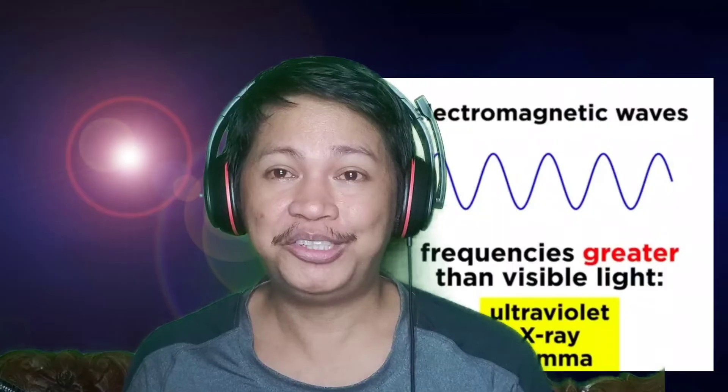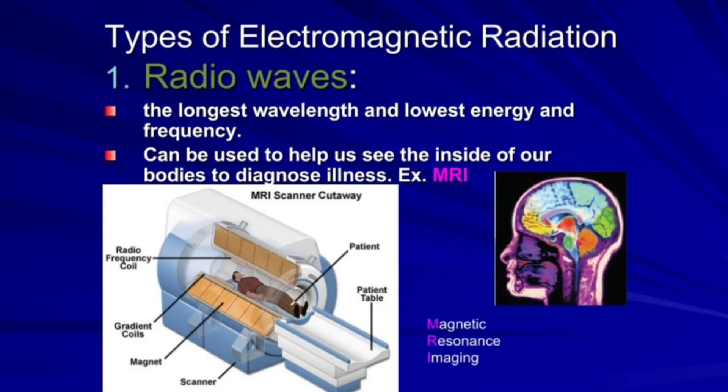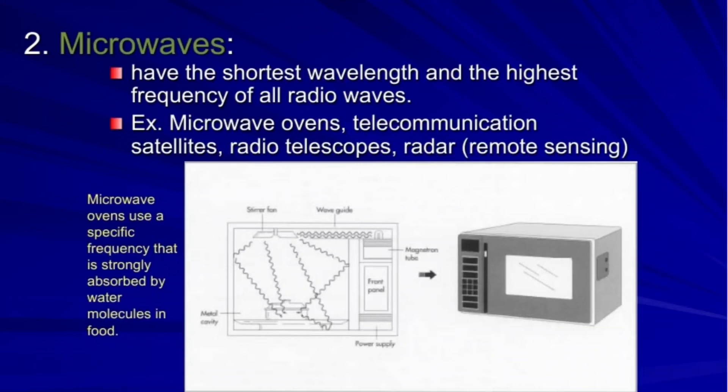The challenge now is to know the technological applications of each wave. I hope that by the end of this vlog you will have learned what these electromagnetic waves are and their applications. Here are the types: number one, radio waves — the longest wavelength, lowest energy and frequency — which can be used to help us see the inside of our bodies to diagnose illness, for example, MRI (Magnetic Resonance Imaging).